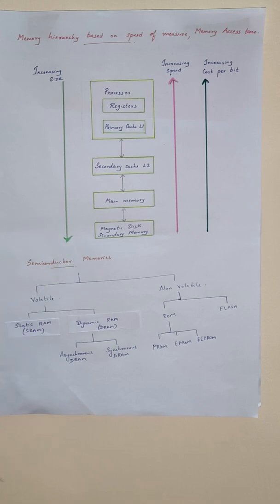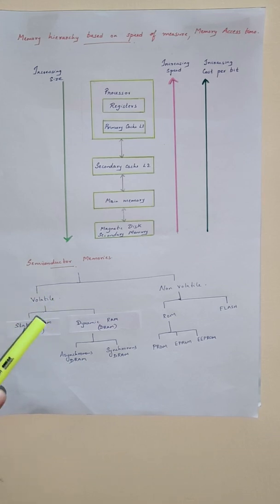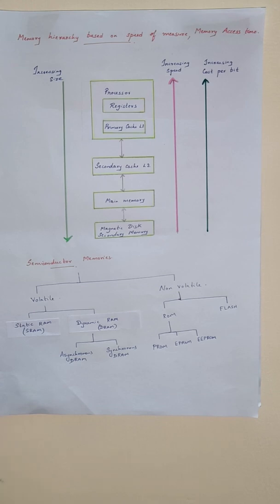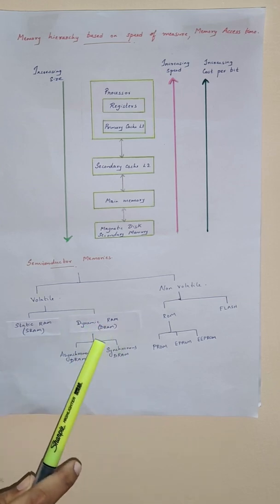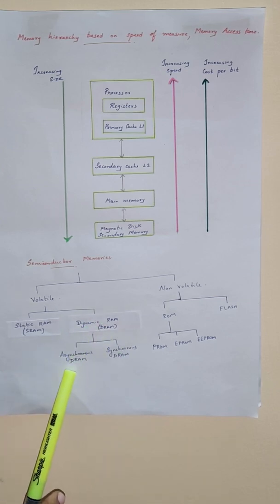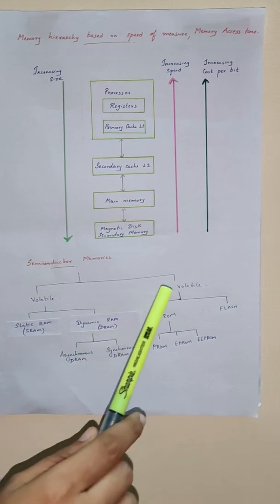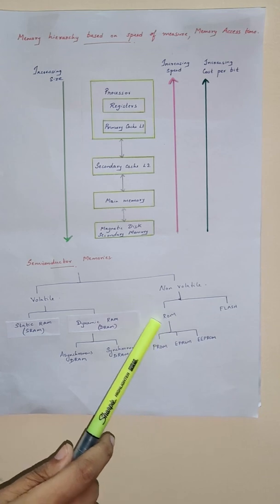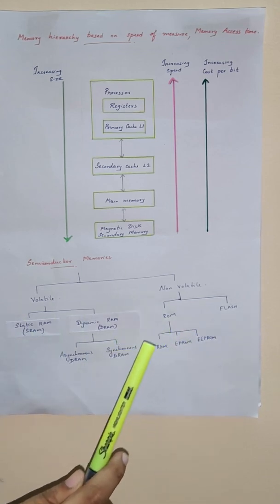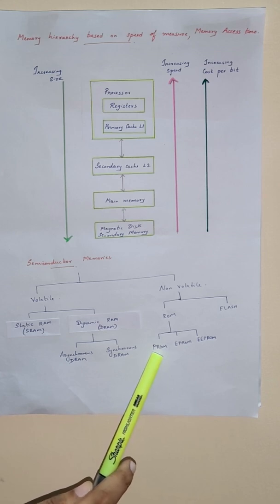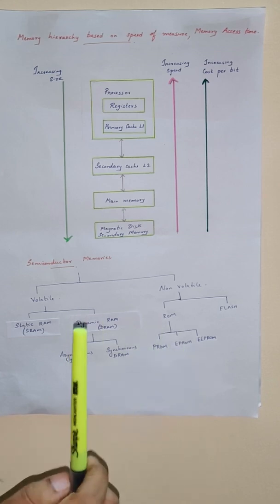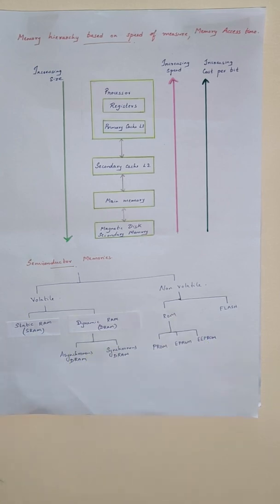Semiconductor memory is broadly classified into two categories: volatile memory and non-volatile memory. A volatile memory holds information as long as DC power is applied — random access memory RAM is a volatile memory. RAM can be divided into static RAM SRAM and dynamic RAM DRAM. DRAM is further classified into asynchronous DRAM and synchronous DRAM. Non-volatile memory can be classified into read-only memory ROM and flash memory. Read-only memory has classifications like programmable read-only memory, erasable programmable read-only memory EPROM, and electrically erasable programmable read-only memory EEPROM.